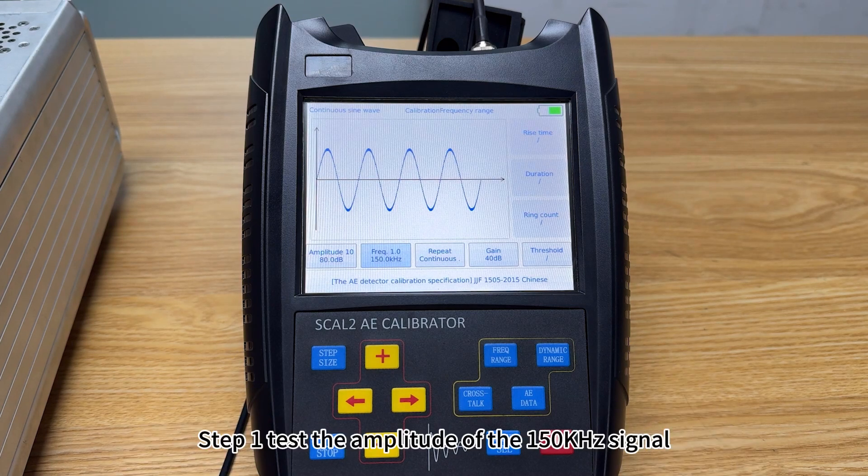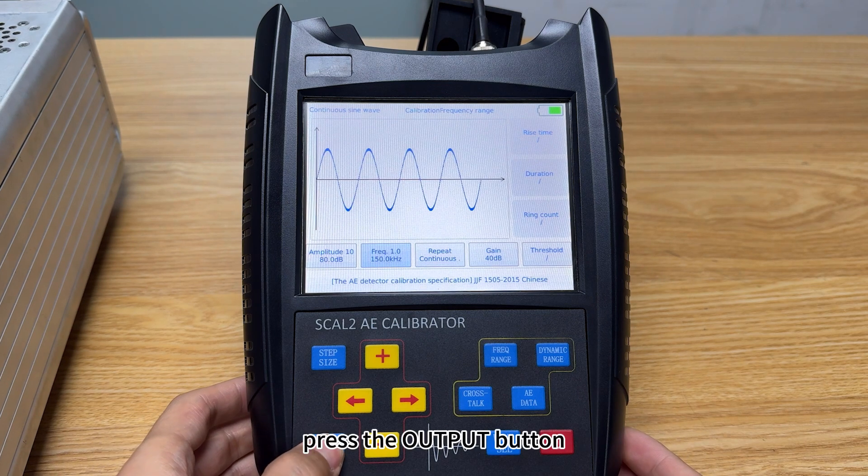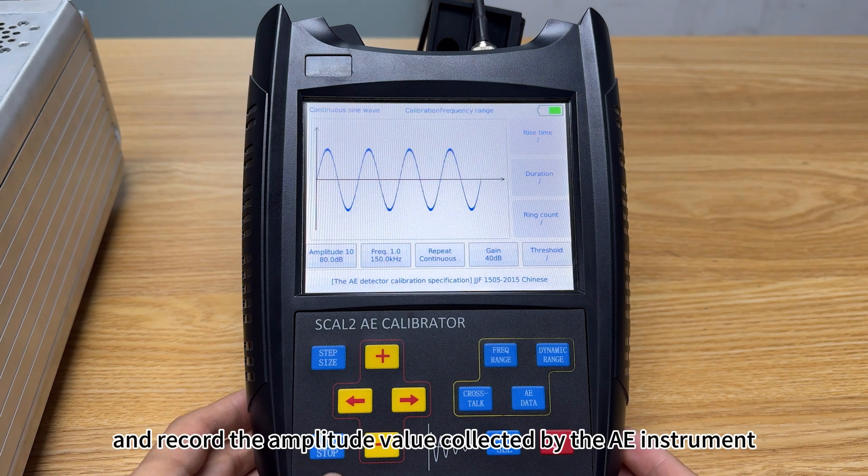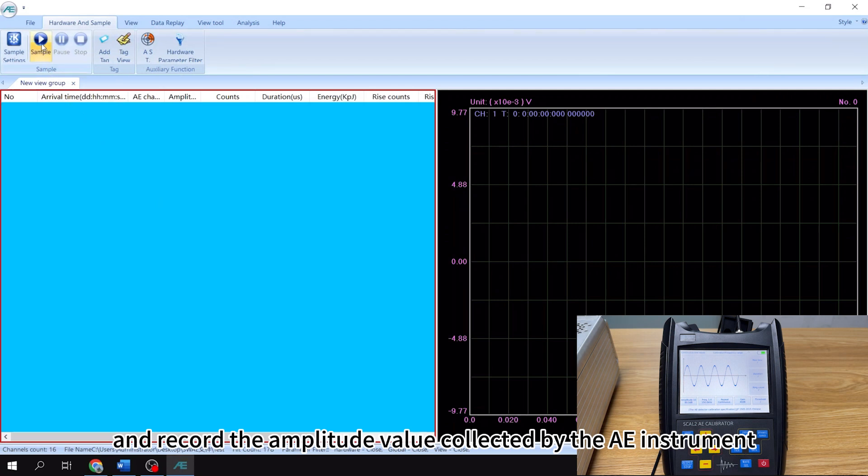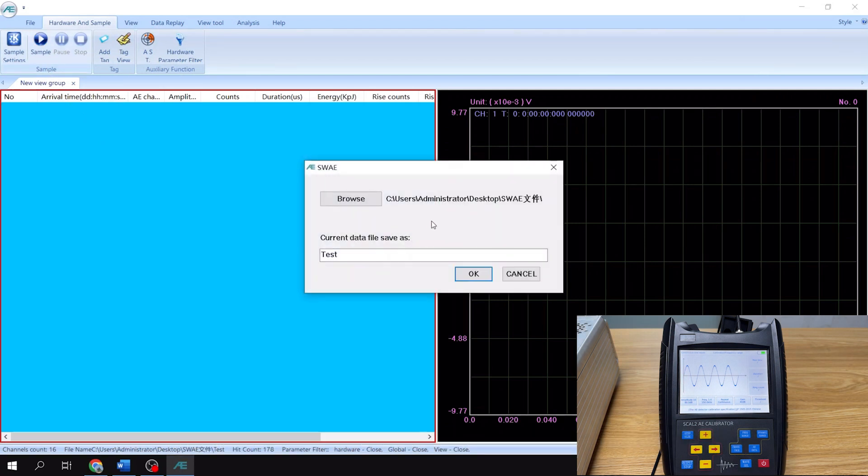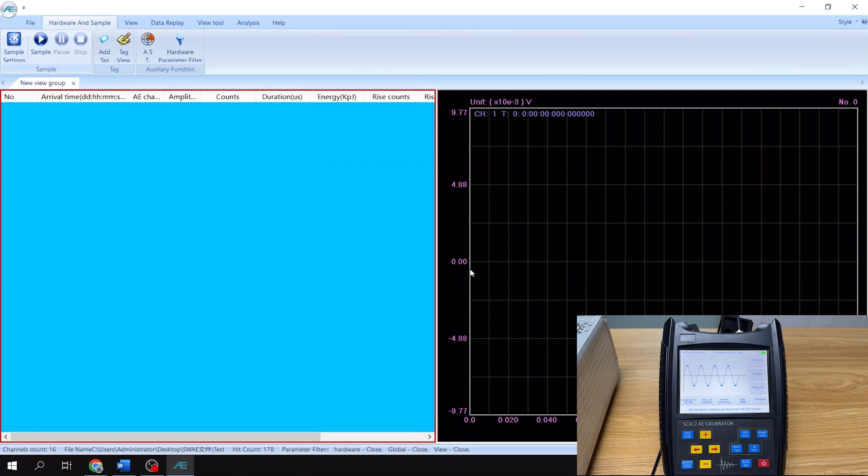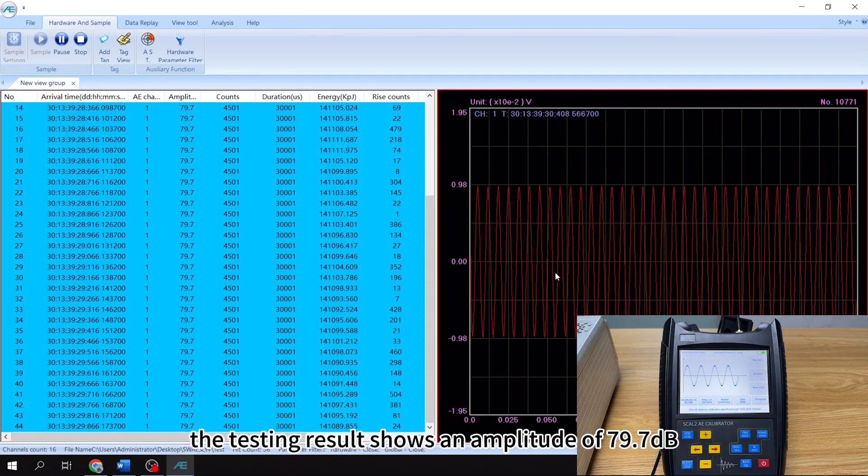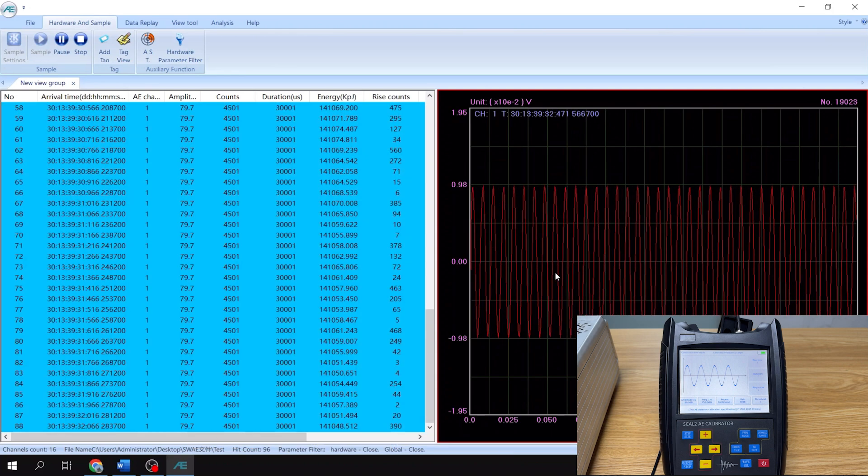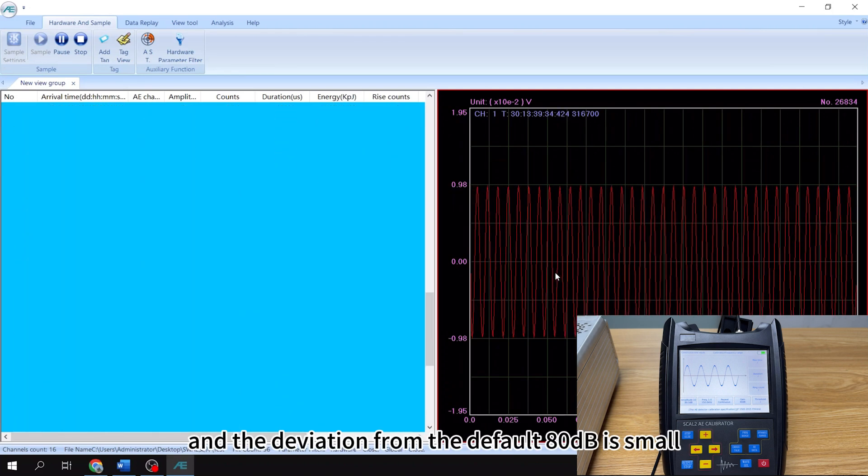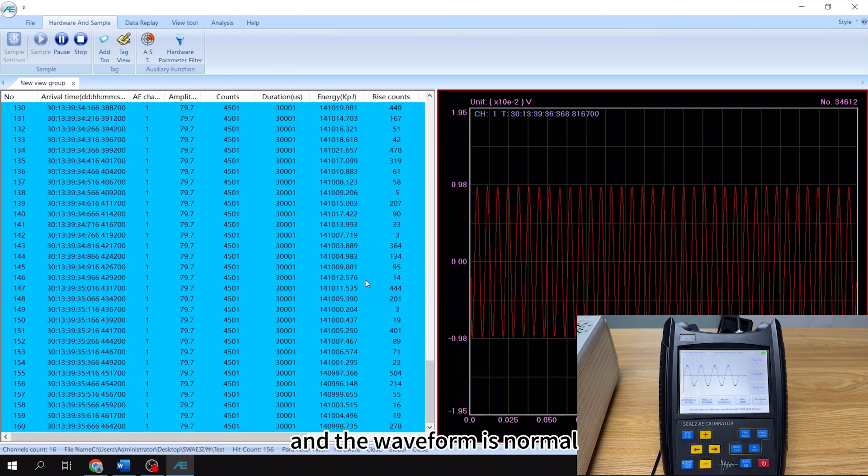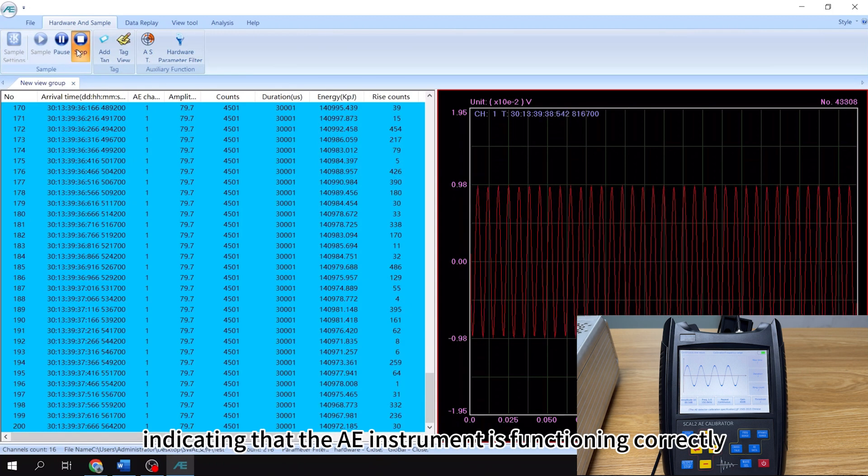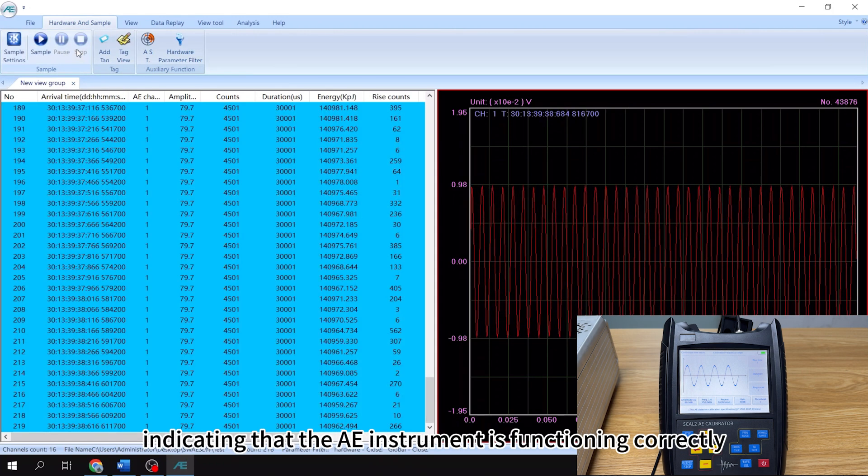Step 1, test the amplitude of the 150 kHz signal. Press the output button and record the amplitude value collected by the AE instrument. The testing result shows an amplitude of 79.7 dB, and the deviation from the default 80 dB is small, and the waveform is normal, indicating that the AE instrument is functioning correctly.